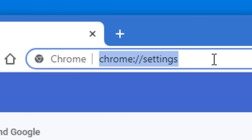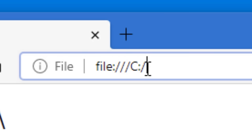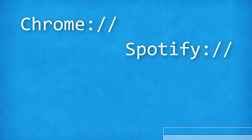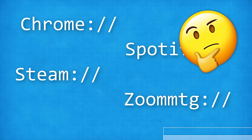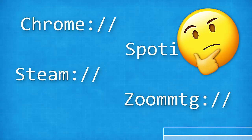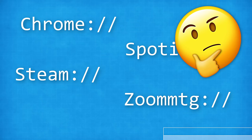It isn't always necessarily just going to be HTTP or HTTPS — there are other ones you may have occasionally come across. You may have come across several software programs that seem to have their own protocol links, for example Chrome, Spotify, Steam, and Zoom. You might have seen these and not really thought anything of it, or maybe you've wondered what that is all about and whether there are other weird protocol links that are not just HTTP.